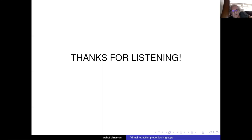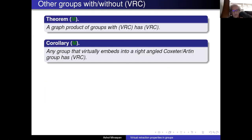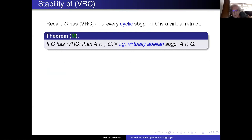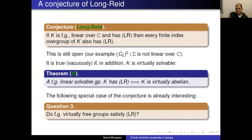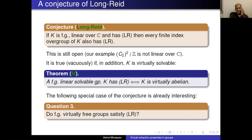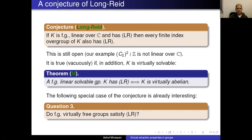Question about virtually free groups: the natural approach would be to take a maximal normal free subgroup and try to use induction on the quotient, and it might be easy to show that free-by-cyclic groups satisfy the property. I haven't tried many special cases. I've been thinking more of the general case — a group acting on a tree with finite stabilizers — and even the amalgamated product of two finite groups I don't have a proof for.